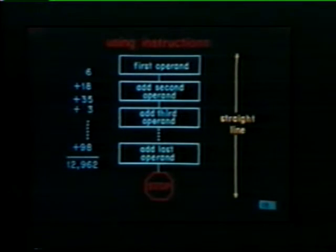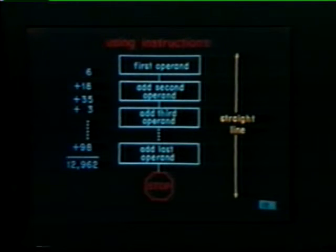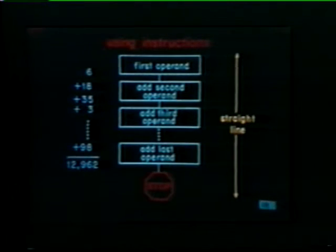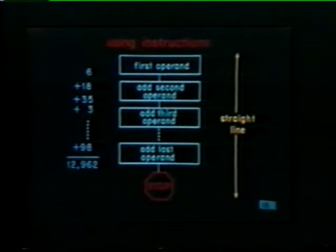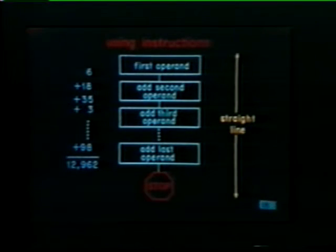We might like to use the instructions to add a long series of numbers together. One method is to get the first operand, then add the second operand to it, then the third and so on for however many operands we have. This is referred to as straight line programming. If we wanted to add 250 numbers together, we'd have to write 250 instructions — a very tedious program. A better approach is to use what is known as a program loop.